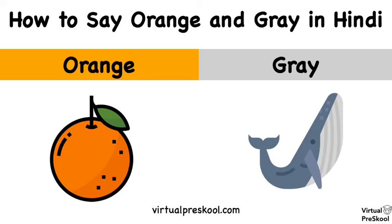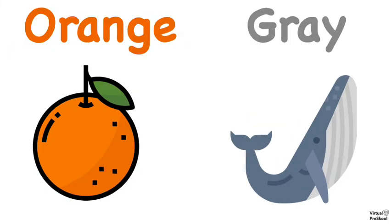Namaste. This is Samtha Auntie. In this video, we're going to review two color words that you learned in class. We're going to review the Hindi words for orange and gray.